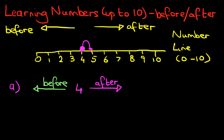So the number before is on the left, the number after is on the right. Coming back to our question, we've got number 4. We've gone one number after 4 and it has come to number 5. So the number after 4 is 5.